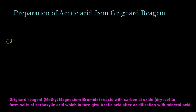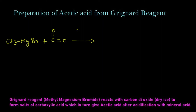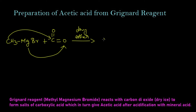CH3MgBr — this is methyl magnesium bromide, a Grignard reagent — we are going to add with carbon dioxide, that is solid carbon dioxide. The reaction takes place in the presence of dry ether. The methyl group will get attached to the carbon and the MgBr will get attached to the oxygen, so we get CH3 C double bond O, O MgBr.